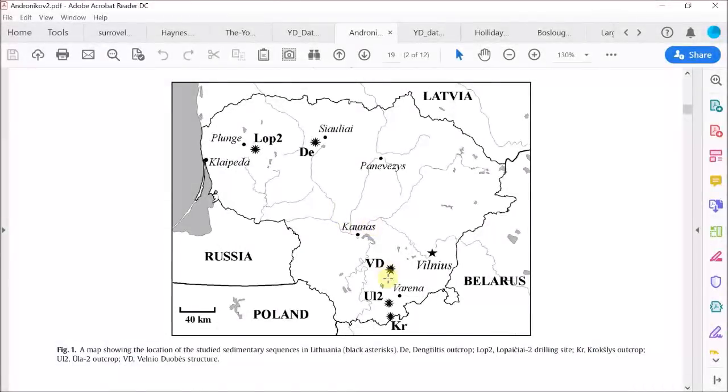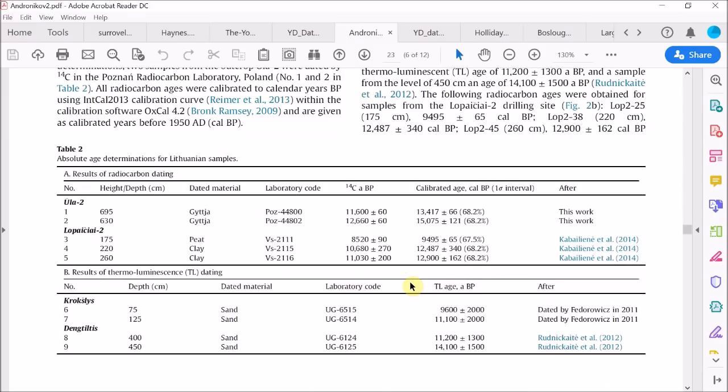So here are the locations of the lakes that they are looking at in Lithuania. But first, let's have a look at this table which shows measurements of the age of the sediments at the various levels in these four lakes. Now it's easy to see that for these two lakes, the dating of their sediments is very imprecise with uncertainties much greater than a thousand years, so these are not really going to be useful for us.